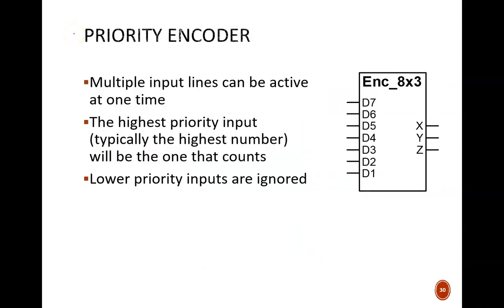A useful additional feature of encoders is to be able to accept multiple active inputs and assign priority to one of them. This prevents the errors possible when an encoder requires that only one input is active. In typical priority encoders, the active input with the highest number gets priority and all of the other inputs are ignored.